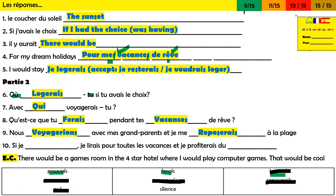This is where it gets tough — it's new. Nous voyagerions avec mes grands-parents et je me reposerais à la plage — 'I would travel with my grandparents and I would relax on the beach.' And then finally: si je pouvais, je lirais pour toutes les vacances et je profiterais du silence — 'if I was able to, I would read all holiday and I would benefit from the silence.' French people use this verb — profiter — all the time. Profiter de is to make or get the most out of. So here it says: if I could, I'd read on the beach and I would make the most out of the silence. That's a beautiful phrase. You can use that for loads of questions you're asked for GCSE.